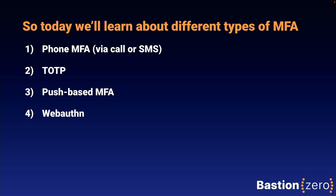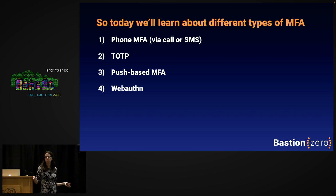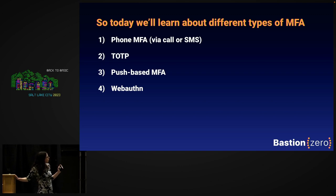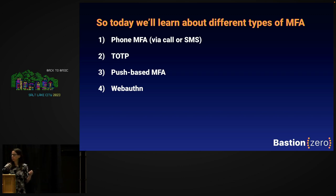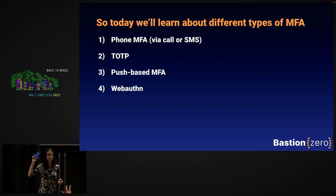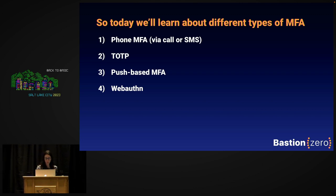So let's learn about different types of MFA. We're going to do four: phone-based MFA, which is used in most consumer technology; TOTP, which is what you probably use at work; push-based MFA, which you may use at work; and WebAuthn, which you probably don't use at work. How many people use WebAuthn at their job? We have one hand. How many people use TOTP — the thing where your Google Authenticator shows codes? And phone-based MFA for your job? Let's look at all of these — their strengths and weaknesses — and see what we can learn.